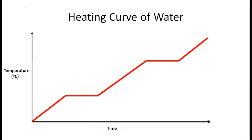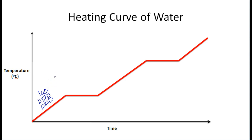This graph represents a heating curve of water. Let's suppose I have some ice, and what we're going to do is add a constant heat source to this ice over time. Let's suppose this ice starts off at negative 20 degrees Celsius and we put a flame underneath it. What will happen is that the temperature is going to start to increase until it gets to this point right here.